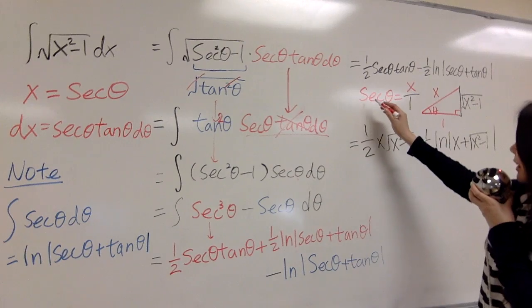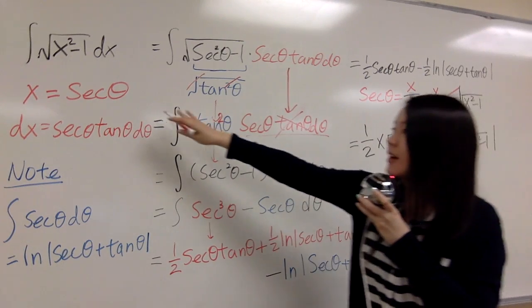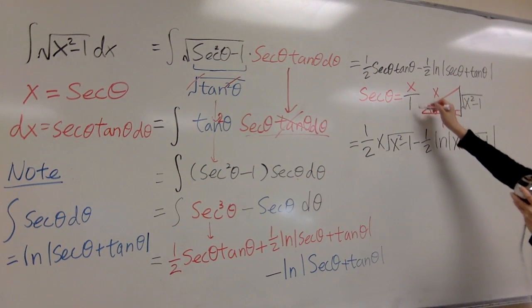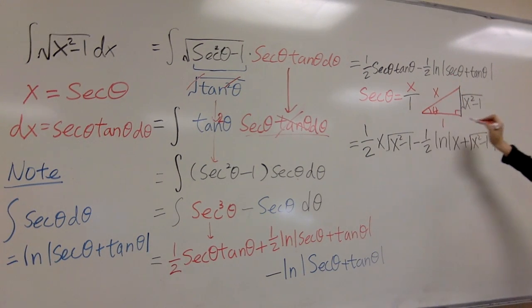Now we set secant theta equals to x, the same as this one. But x you can think it as x over 1, then you graph it, triangle.